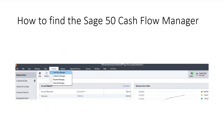In Sage 50, there is a built-in cash flow statement. It is found under Analysis on the main taskbar, and then by selecting Cash Flow Manager.